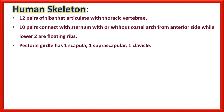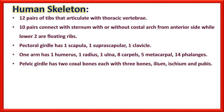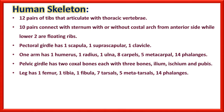The pectoral girdle has one scapula, one suprascapula, and one clavicle. One arm has one humerus, one radius, one ulna, eight carpals, five metacarpals, and fourteen phalanges. The pelvic girdle has two coxal bones, each with three fused bones: ilium, ischium, and pubis. The leg has one femur, one tibia, one fibula, seven tarsals, five metatarsals, and fourteen phalanges — note the comparison: seven tarsals in the leg vs. eight carpals in the arm.